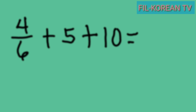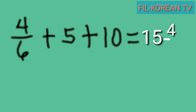Let's have another example: four sixths plus five plus ten equals. In this example, there is only one fraction and two whole numbers. What we're going to do is add the whole numbers and copy the fraction. Five plus ten equals fifteen, and copy the fraction four sixths. The answer is fifteen and four sixths.